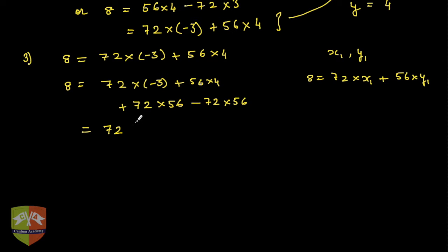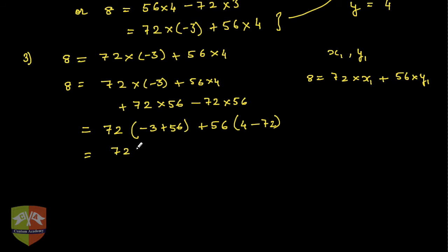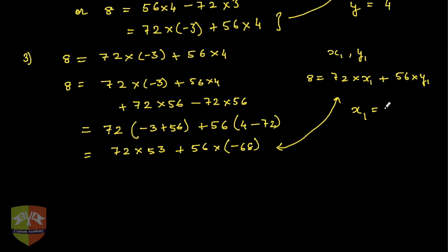Taking 72 common between the first and third terms gives 72 × (−3 + 56), and taking 56 common in the remaining terms gives 56 × (4 − 72). Simplifying: 8 = 72 × 53 + 56 × (−68). Comparing with 72 × x1 + 56 × y1, we get x1 = 53 and y1 = −68. So we have a new pair of integers — the previous pair was x = −3, y = 4, and now we have x1 = 53, y1 = −68.